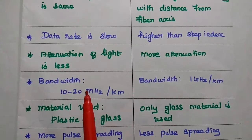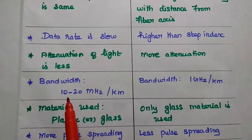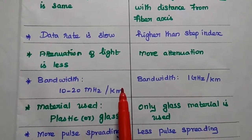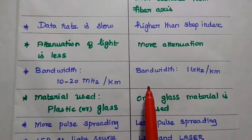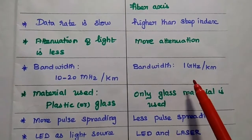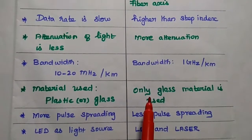The bandwidth efficiency is low in this step index. It is around 10 to 20 MHz per kilometer. But for this graded index, its value is high, that is 1 GHz per kilometer.